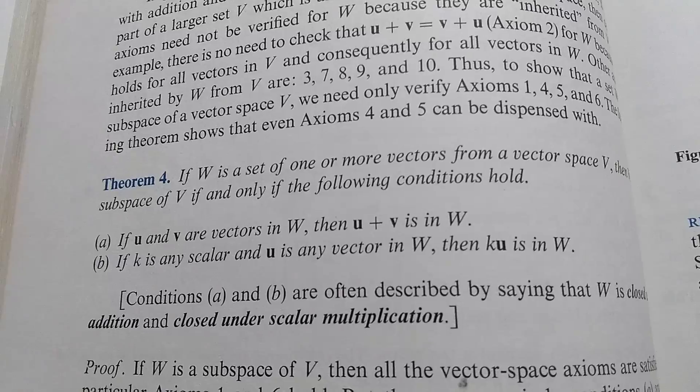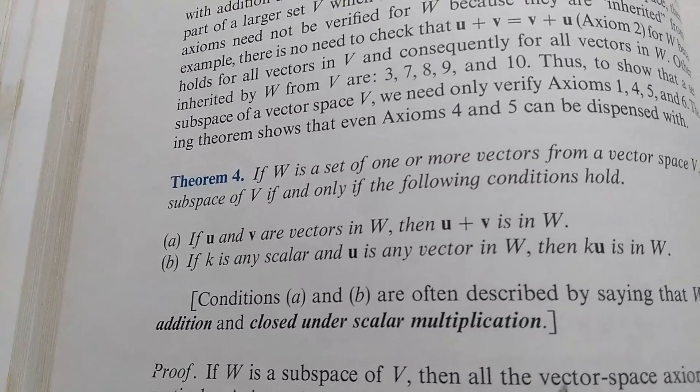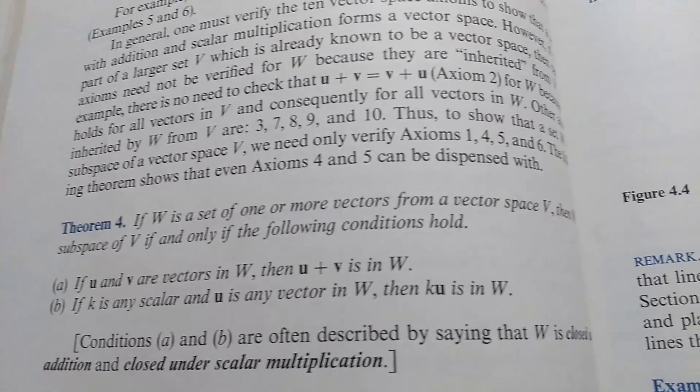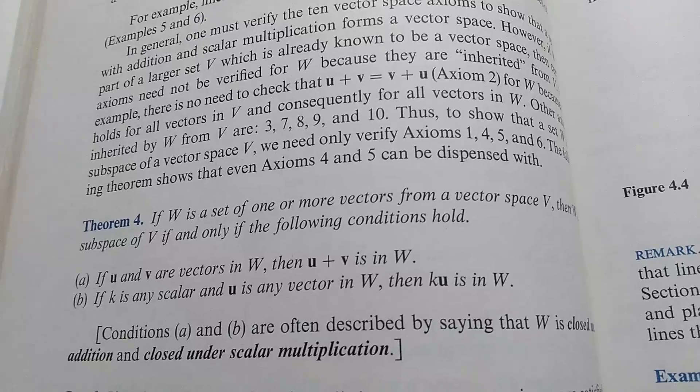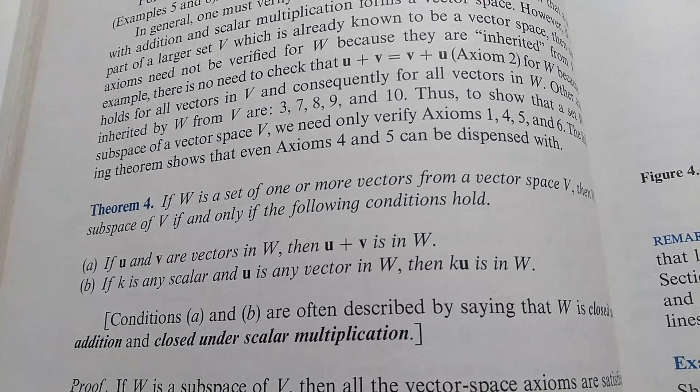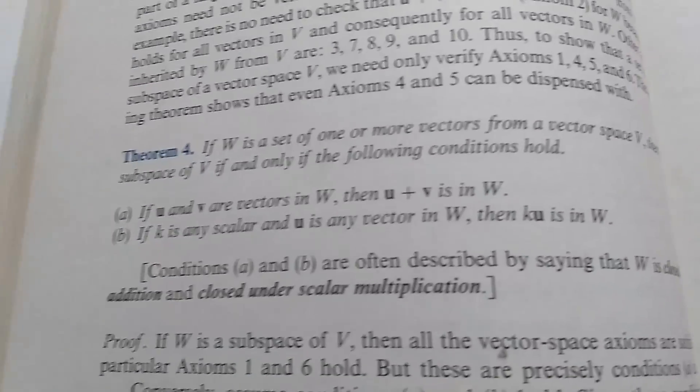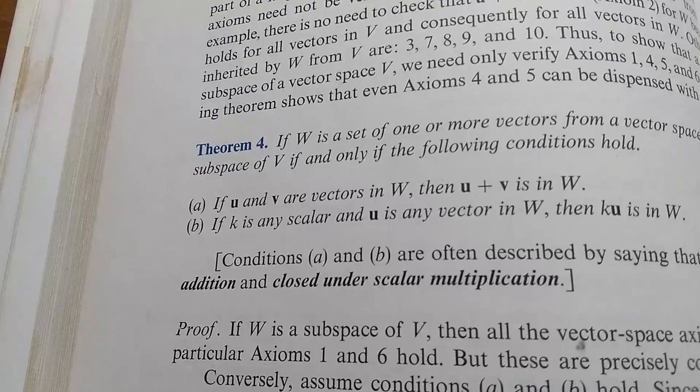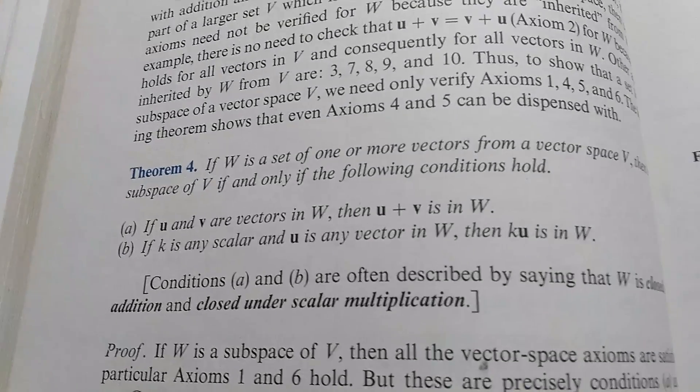Here he talks about the subspace criteria. It says if W is a set of one or more vectors from a vector space V, then W is a subspace of V if and only if the following conditions hold. So if U and V are vectors in W, then the sum of the vectors U plus V is also in W.